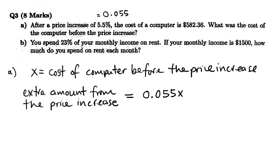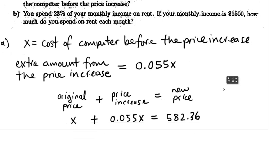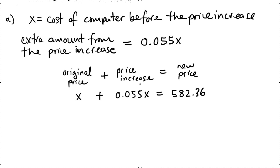If we add these two quantities, we're going to get the new price. So the original price plus the price increase equals the new price. The original price is just x. The amount of extra money we have to pay is 0.055x. And the new price is $582.36. So now we have a simple algebra equation to solve. There's really a 1 here, so 1x plus 0.055x is just 1.055x equals that.